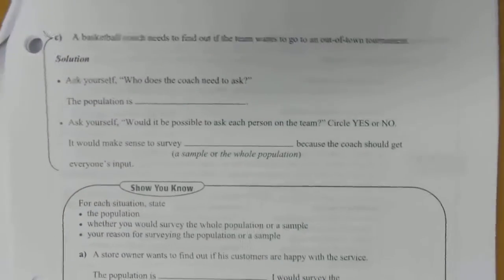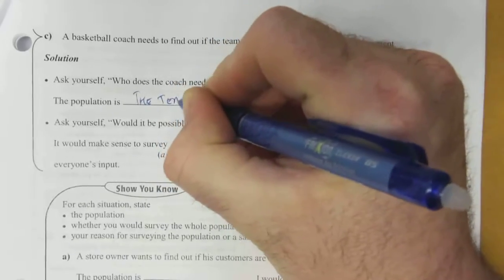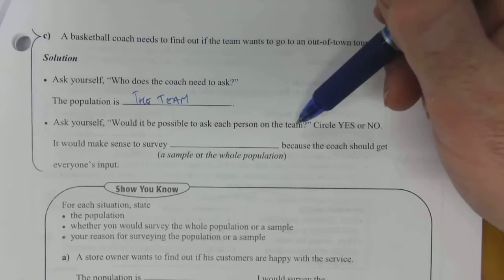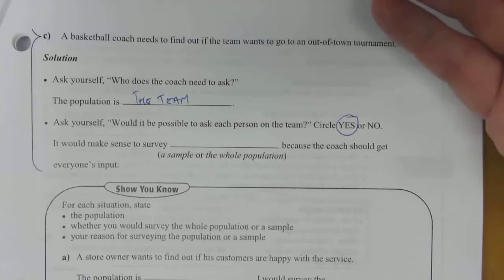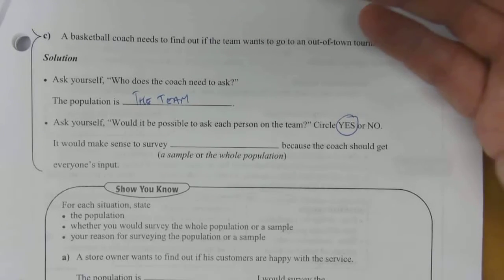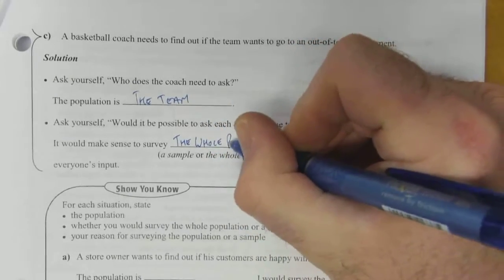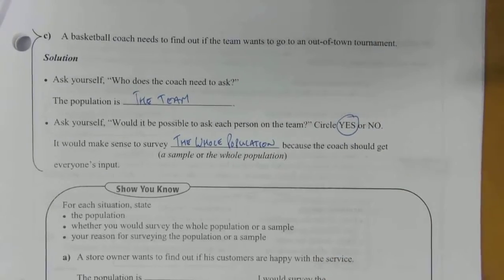Next page. A basketball coach needs to find out if the team wants to go to an out-of-town tournament. Who does the coach need to ask? He needs to ask the team — the population is the team. Would it be possible to ask each person on this team? It's a team, it's highly interactive, and it's a limited number of people. So yes, it would be possible to ask everybody. Would it make sense to take a sample? Probably not — you need to know if your whole team is going to be there, so you need to really ask the whole population. Because the coach does need to get everybody's input. If you have a couple of key players that can't make it, that really impacts the decision whether or not you take the team out of town.